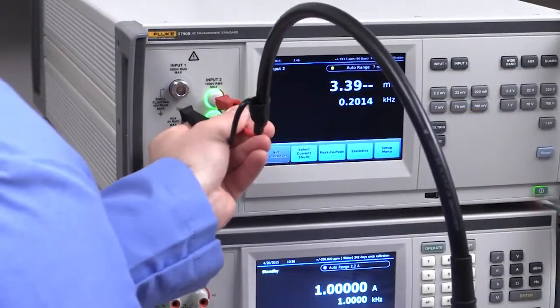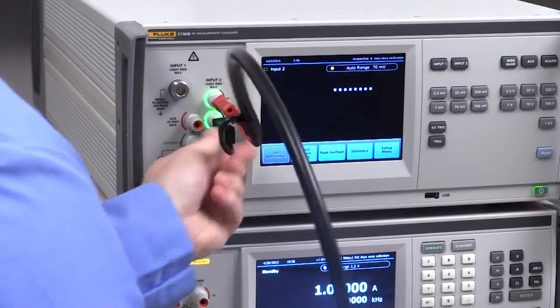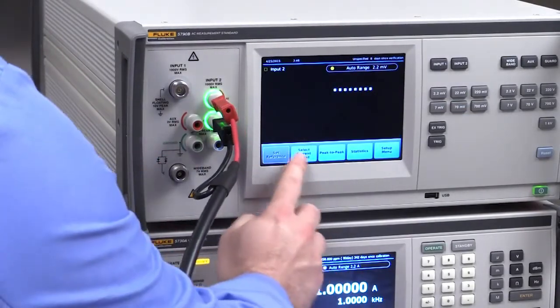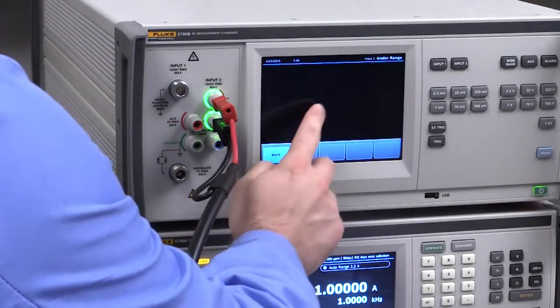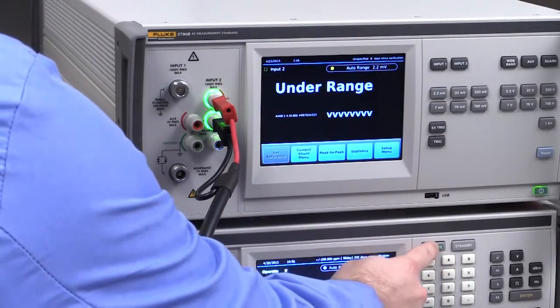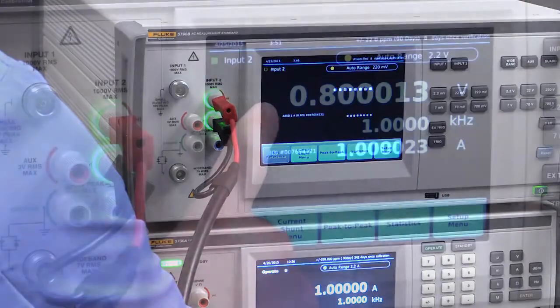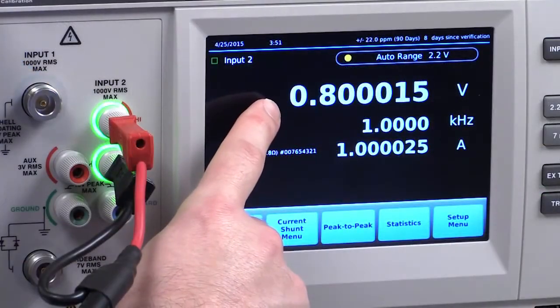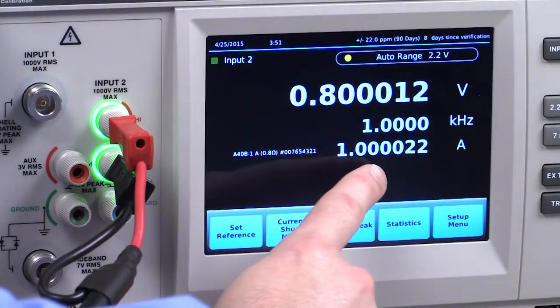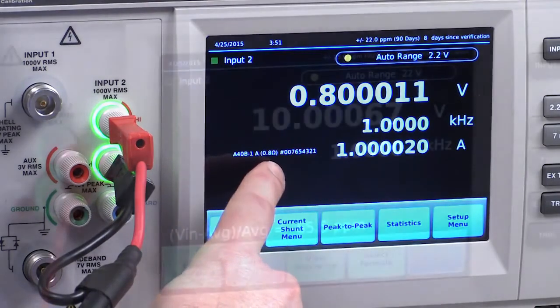After the shunt information has been loaded and you're ready to make a current measurement, you can quickly connect a shunt to the 5790B and select it by opening the shunt library and finding the shunt by its range and serial number. When using a current shunt, the 5790B displays both the voltage and current measurements along with the shunt information.